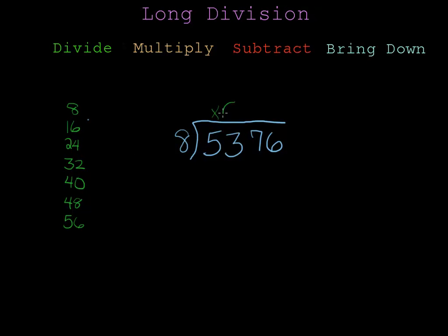I'll put the 6 on top of the 3 because 8 went into 53 6 times. Now my next step is to multiply and we already know that it's 48. My next step is to subtract. So I will subtract 48 from 53. I'll have to borrow from the 5 to make 13 and 13 minus 8 is 5.